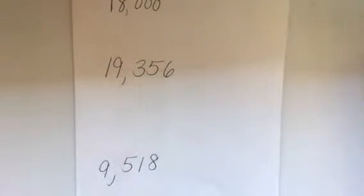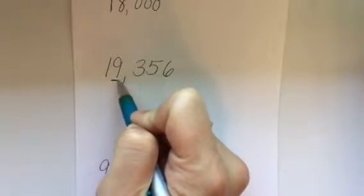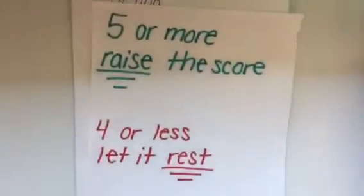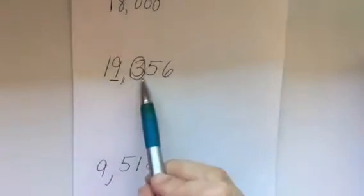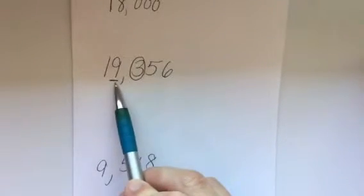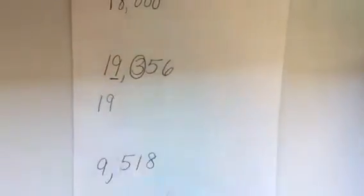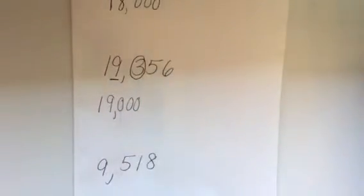We're going to look at this one — 19,356. We're rounding to the nearest thousand, so I'm going to underline my digit in the thousands place, circle the one directly to its right, and come back to my saying: five or more raise the score, or four or less let it rest. In my circle I have a three — that's four or less, let it rest. So I am going to let that underlined nine rest, leave it alone. The numbers to the left stay the same and the numbers to the right become zeros: 19,000.